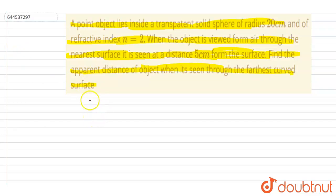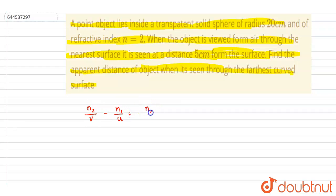We use the refraction through a spherical surface formula: n1 by v equals n2 minus n1 by R. Let's put in the values now.